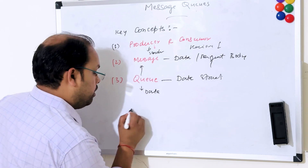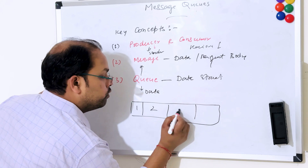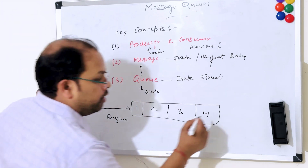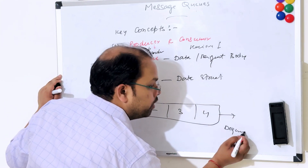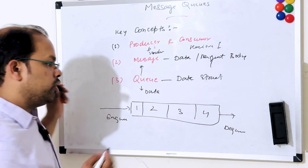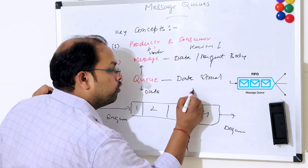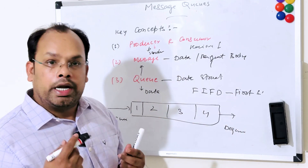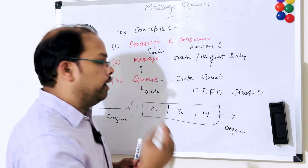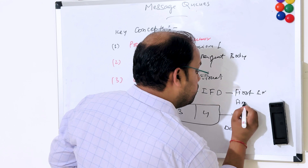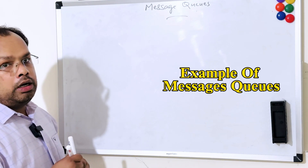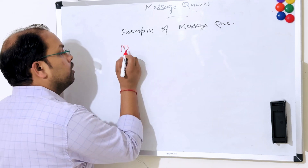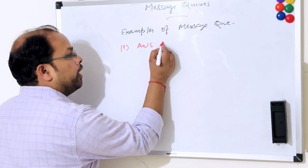The producer is your sender, the consumer is your receiver, and the queue is basically a data structure which holds or stores that particular data — like positions 1, 2, 3, 4. We can enqueue data from one end and dequeue data from the other end. A queue is a data structure which follows FIFO — First In, First Out — meaning whatever comes in first will go out first.